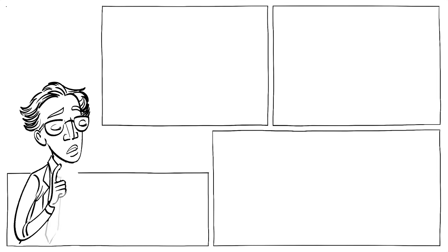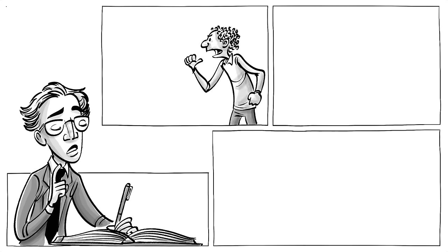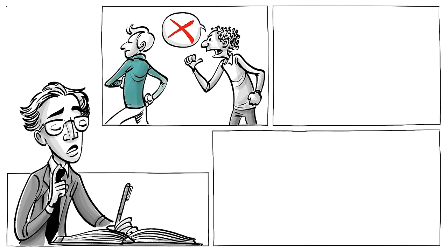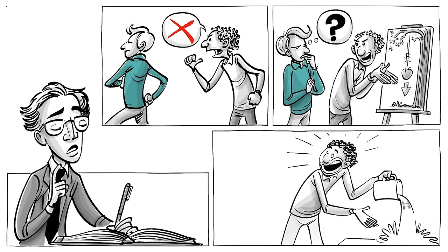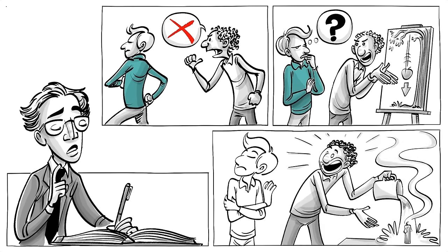Leon Festinger later wrote, a man with a conviction is a hard man to change. Tell him you disagree and he turns away. Show him facts and he questions your sources. Appeal to logic and he fails to see your point.